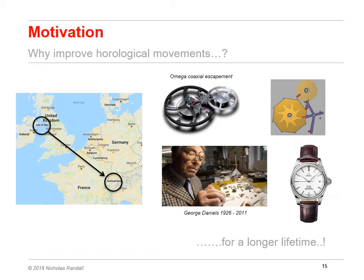This escapement has now been commercialized by Omega in Switzerland since the 90s. An interesting anecdote is that Daniels developed his escapement at his home on the Isle of Man, which has an average year-round humidity of 75 to 90 percent. There the escapement worked flawlessly. However, when he sold his invention to Omega in Switzerland, where the humidity can be lower than 50 percent in the winter, they found that the escapement could stop running under certain conditions. In the end, they decided to still lubricate it to prevent such stoppages. This just shows how even slight changes in the environment can affect tribological contacts.